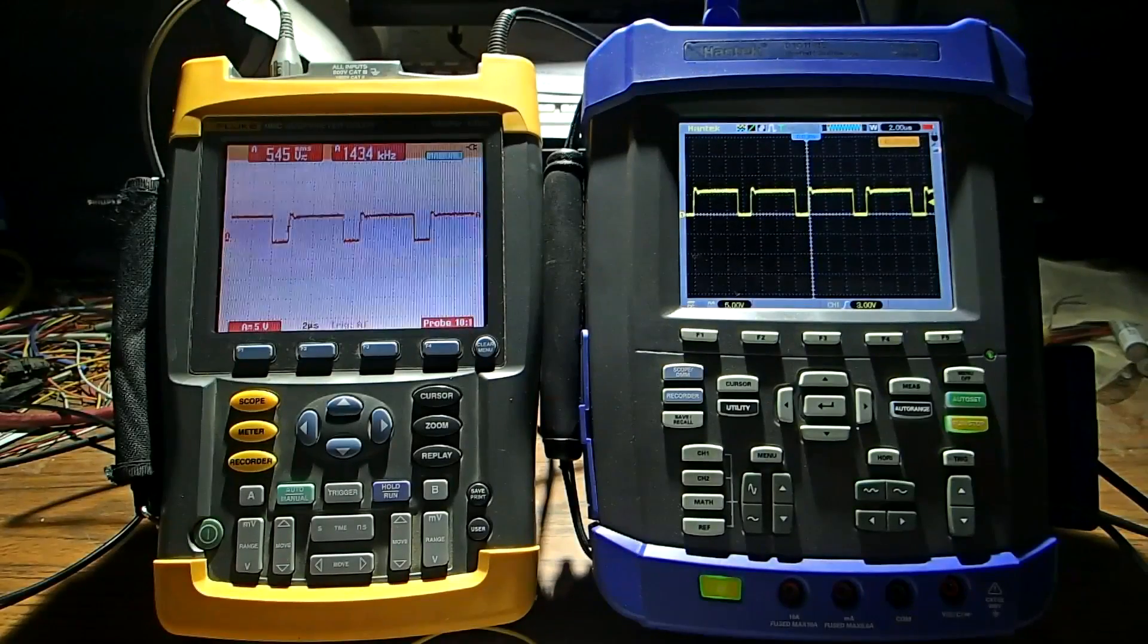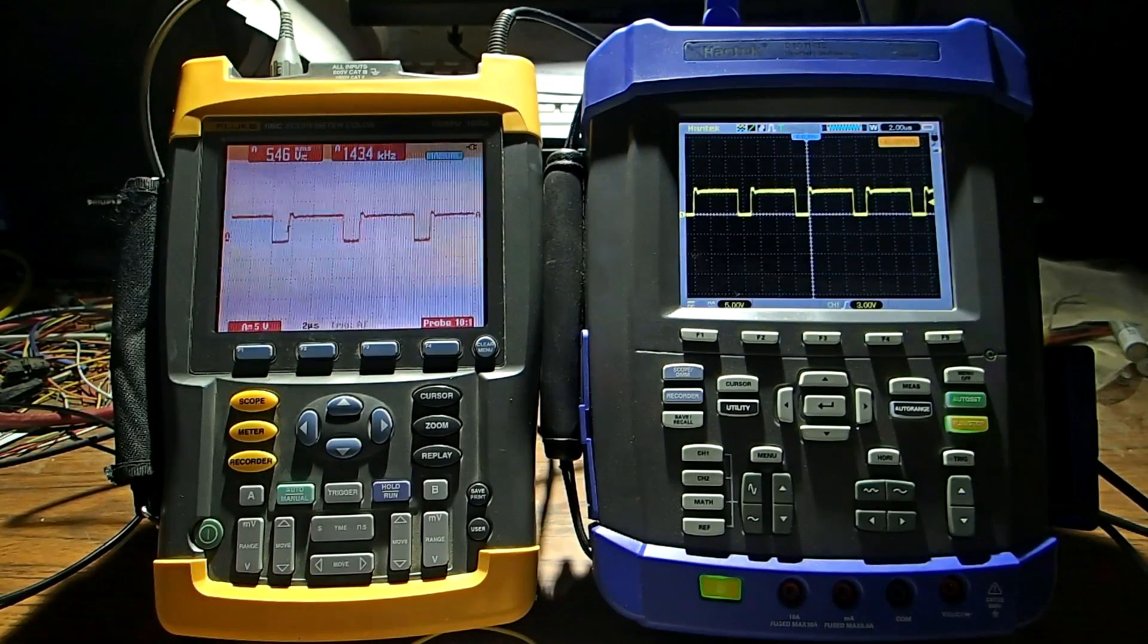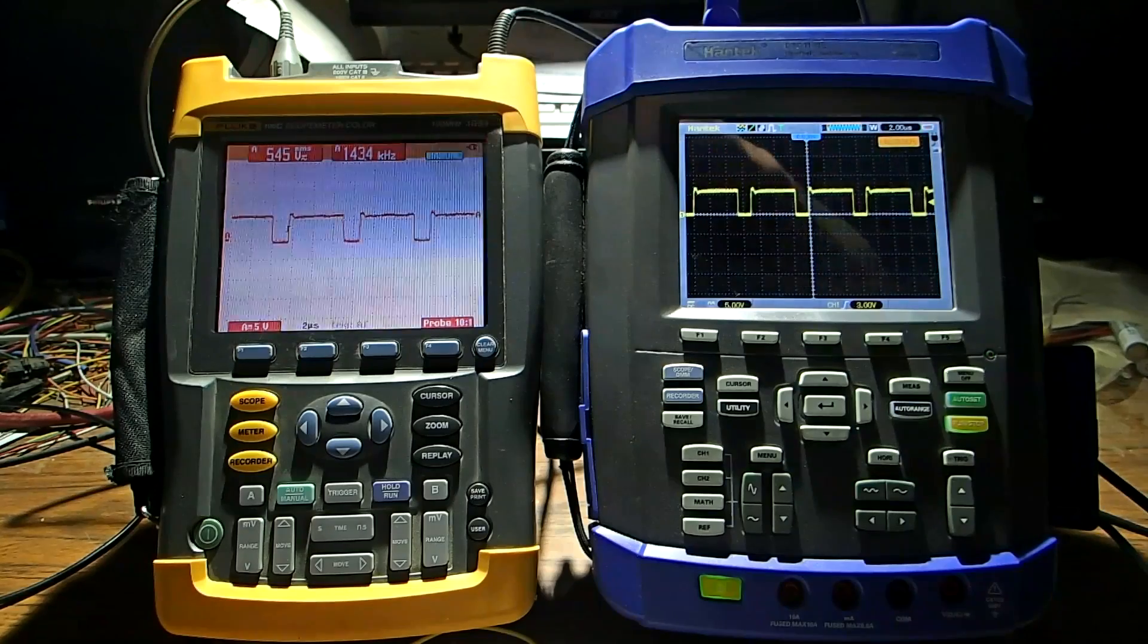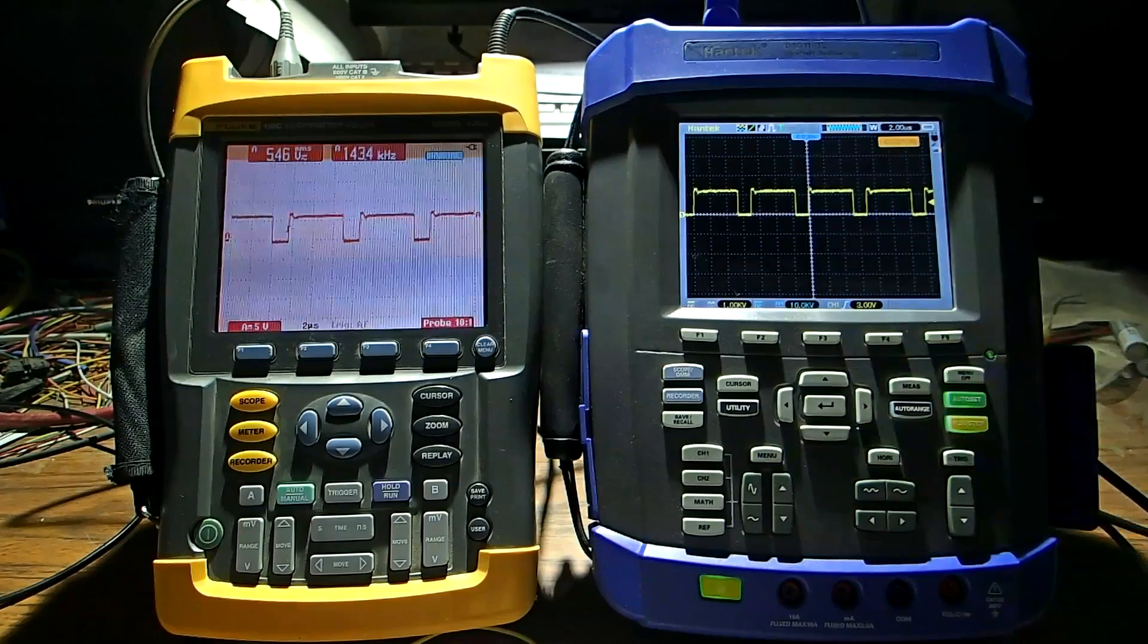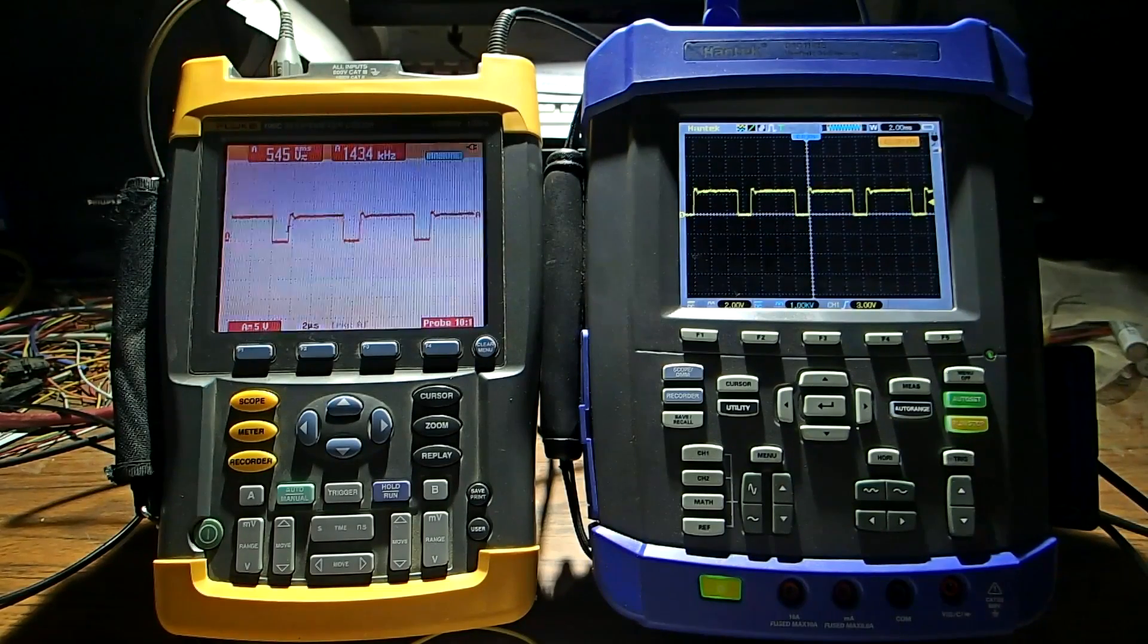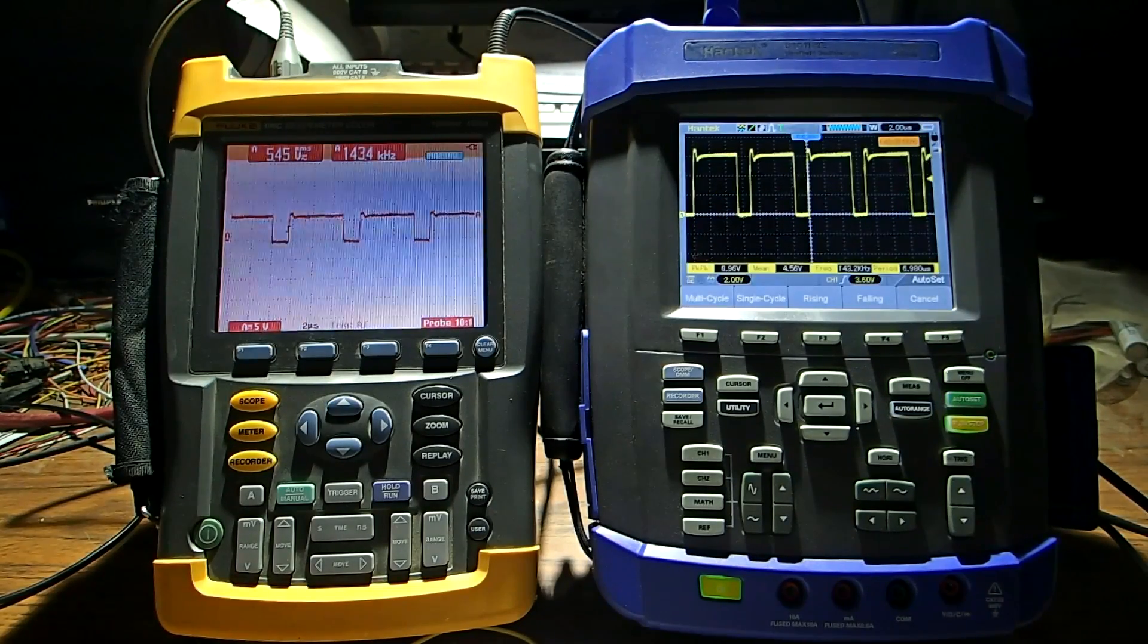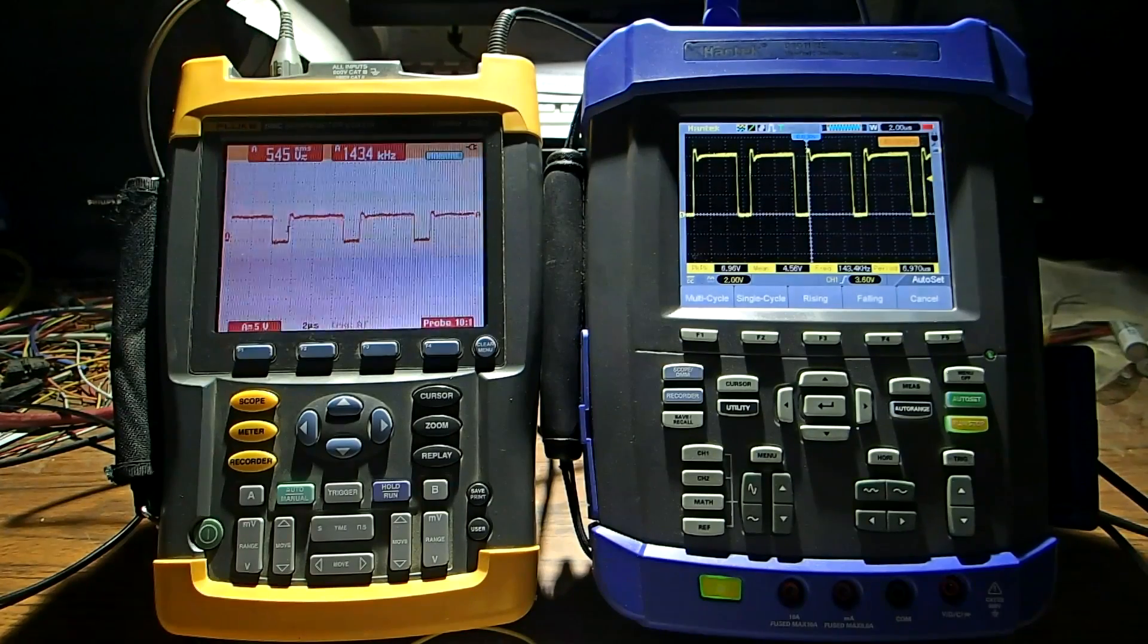One feature that this Hantec scope has I've noted right now over this Fluke scope is it has this auto set when you press that it calibrates everything. So if you press it it goes through the whole range and then it's basically finished right there.